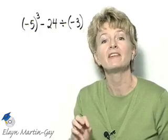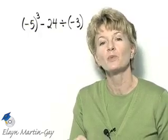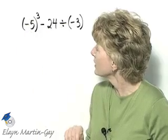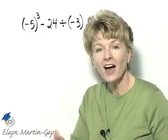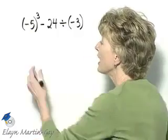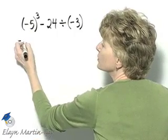Remember order of operations: we evaluate expressions raised to exponents first. So let's evaluate negative 5 quantity cubed. That's negative 5 times negative 5 times negative 5, which is negative 125.